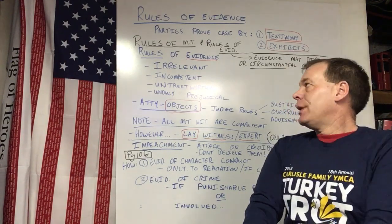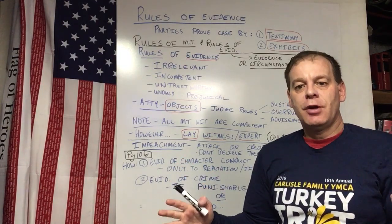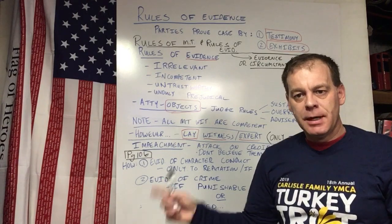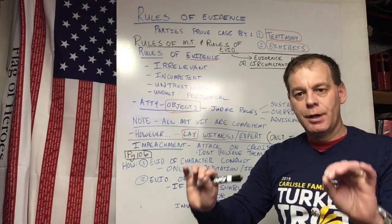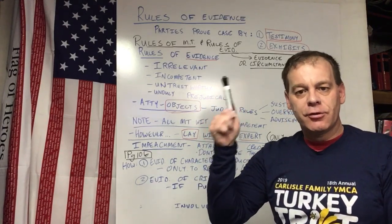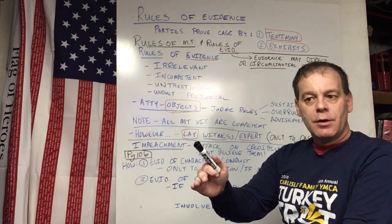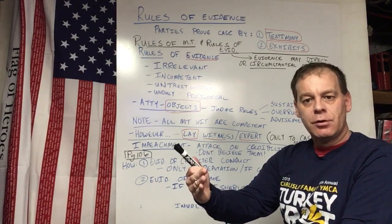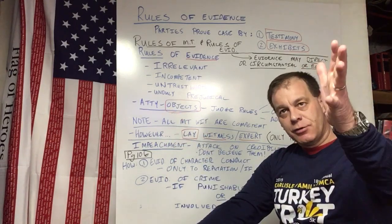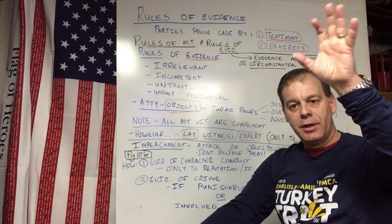When we have evidence questions, it doesn't become an issue unless the attorney objects, and then the judge rules on it. Everything comes in until an objection is made. The judge is going to rule in three ways: one is to sustain the objection — that means stop, don't answer the question. Overruled means the attorney keeps going; the judge says the question is allowed and you continue asking it.